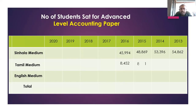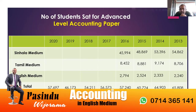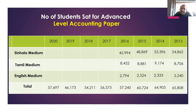Let me take everything to the screen. In year 2020 — the most recent paper — there were 57,697 students who sat for the Advanced Level accounting paper. These 57,000-plus students are your real competitors.